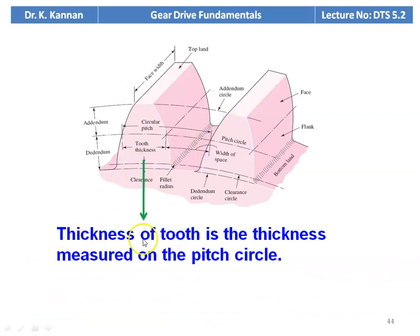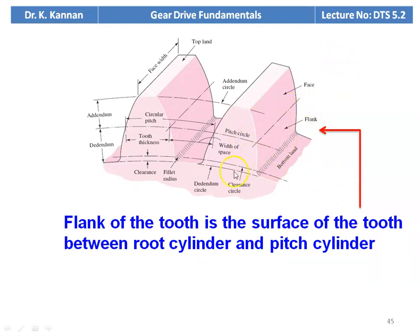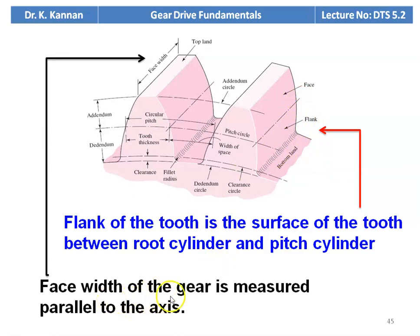The thickness of the tooth is measured along the pitch circle. The face of the tooth is the surface of the tooth between the tip circle and the pitch circle — between the tip cylinder and the pitch cylinder. The flank of the tooth is the surface of the tooth between the root cylinder and the pitch cylinder — between the root circle diameter and the pitch circle diameter. The face width of the gear is measured parallel to the axis.